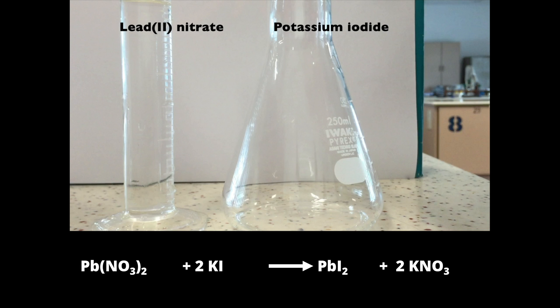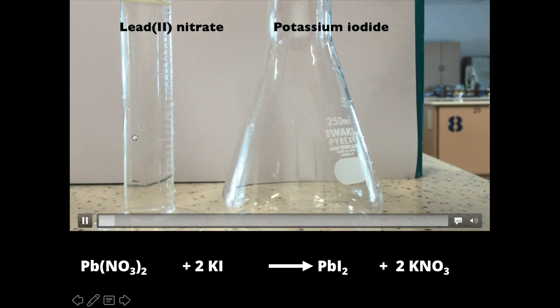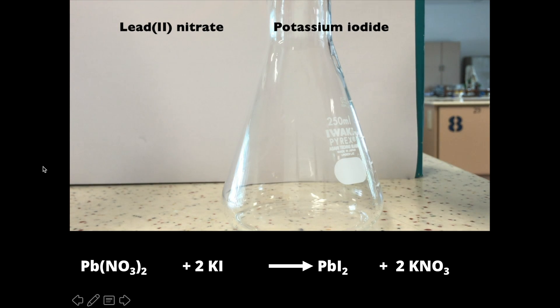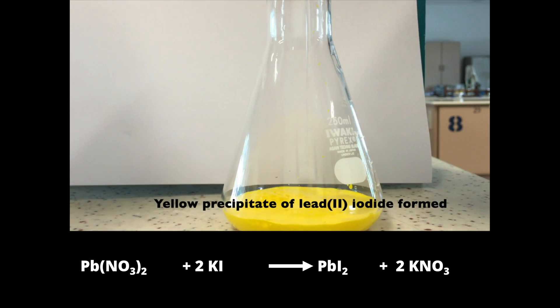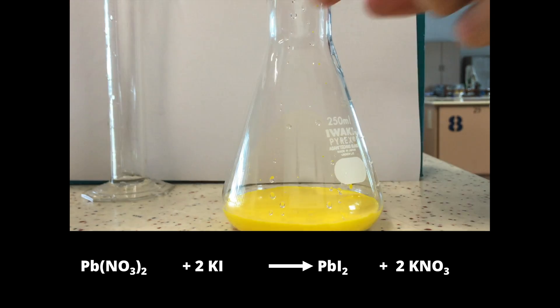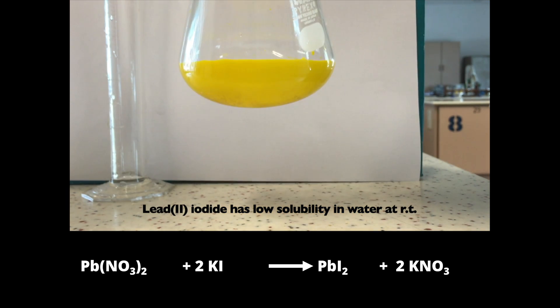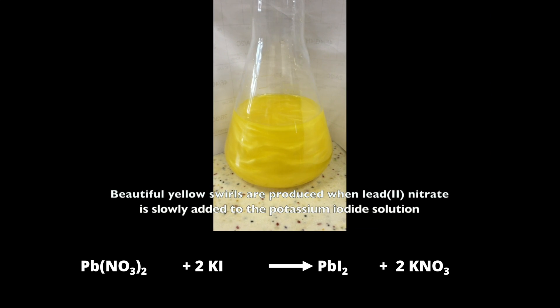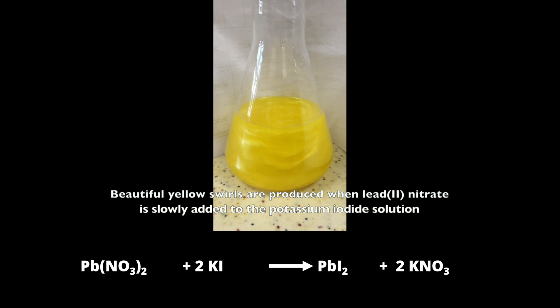Let's look at one more example. On the left we have a solution of lead(II) nitrate, and on the right a solution of potassium iodide. When both solutions are mixed, a solid is formed — the yellow solid is lead(II) iodide. Even though both reactants are aqueous solutions, the product is unable to dissolve in water because lead(II) iodide is not very soluble in water. The two reactants are both (aq), and the product lead(II) iodide is insoluble in water, so we give it the state symbol (s).